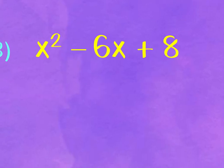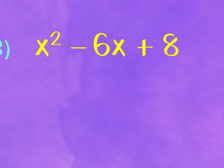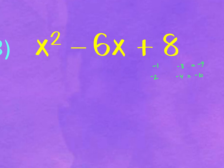Problem 3: factors of 8, both signs negative this time. Negative 1 & negative 8 gives −9; negative 2 & negative 4 gives −6, and that's the one that works. So (x − 2)(x − 4).